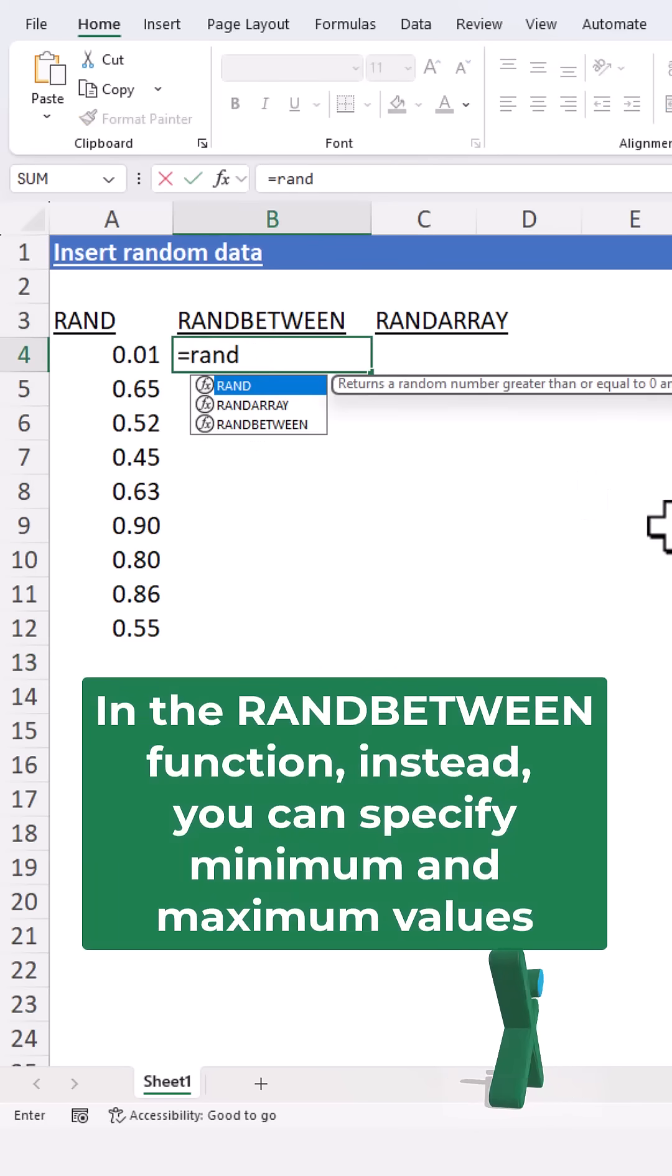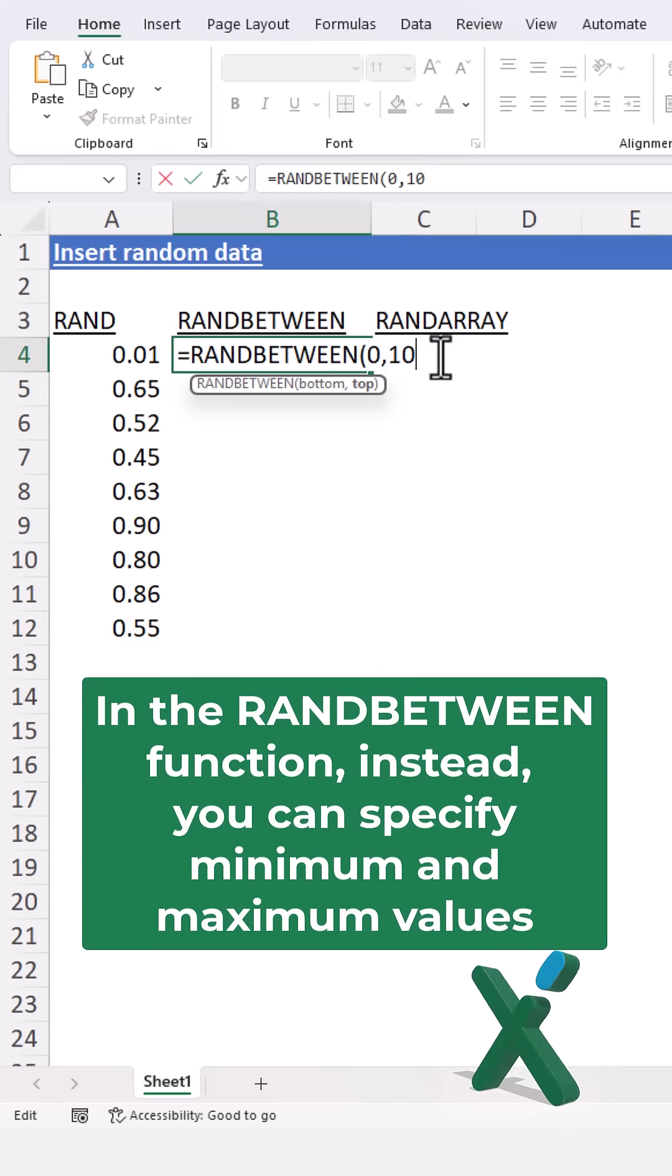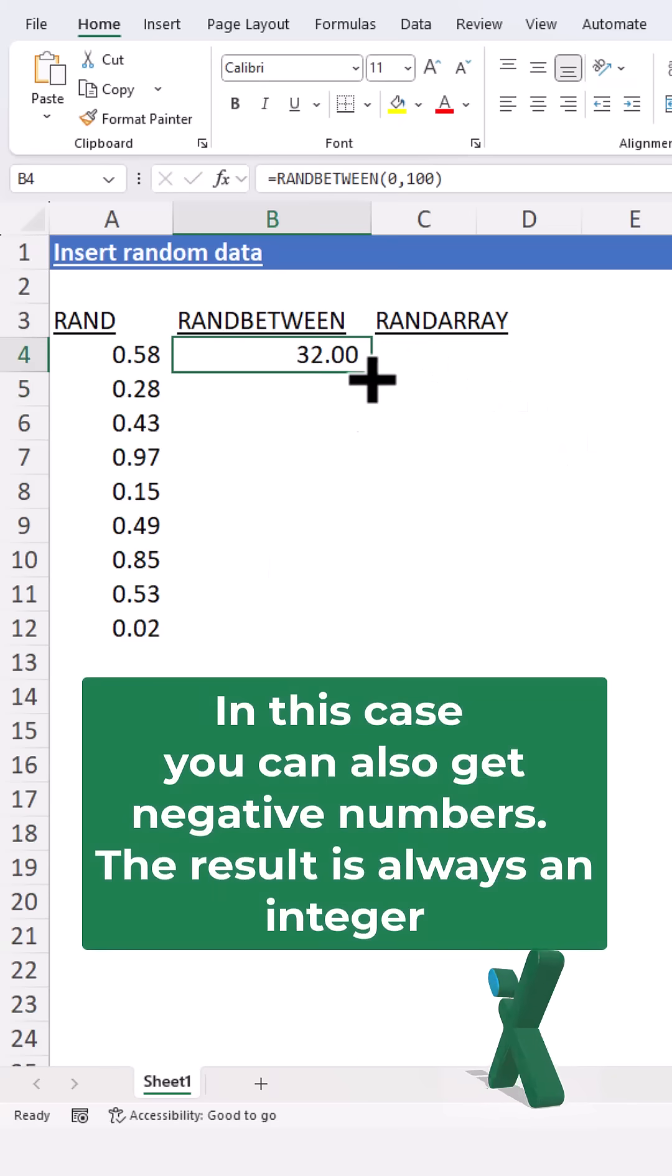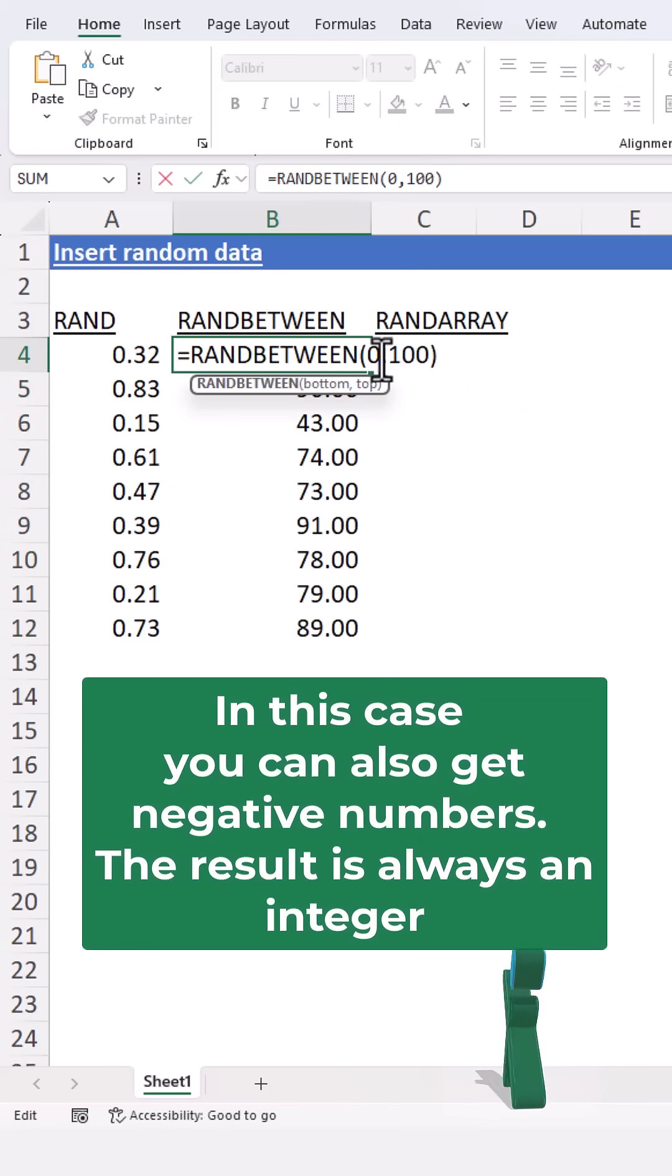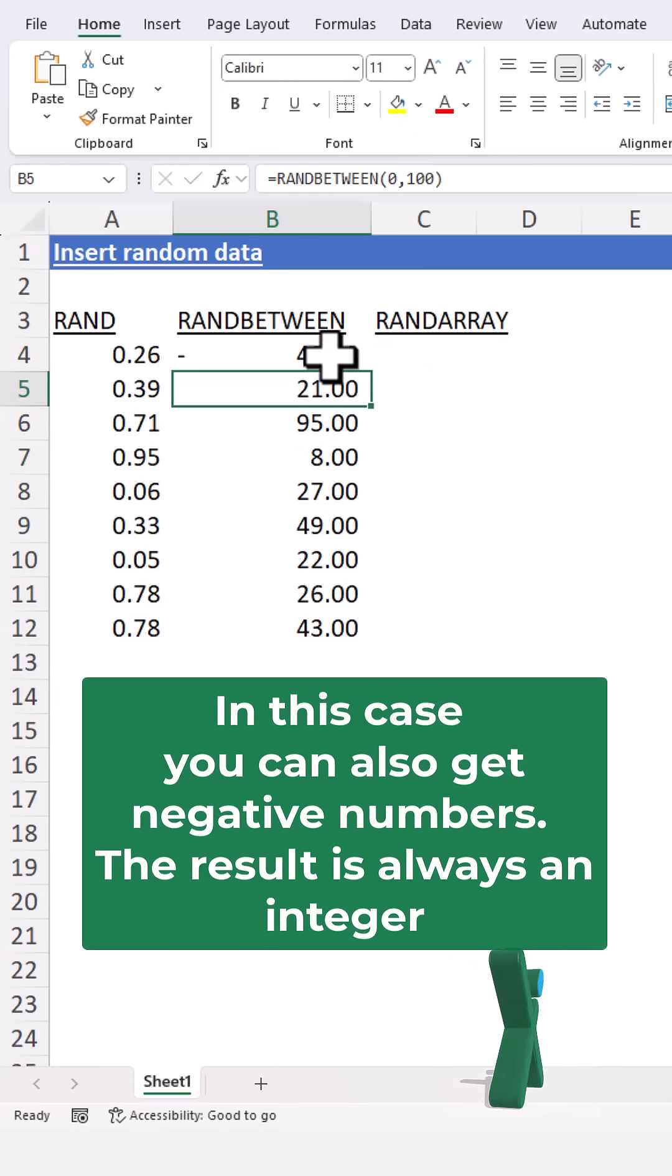The result changes with each update. In the RANDBETWEEN function instead, you can specify minimum and maximum values. In this case, you can also get negative numbers. The result is always an integer.